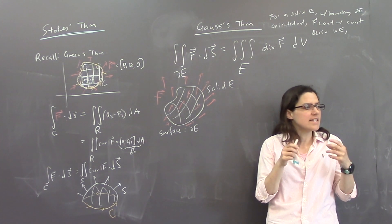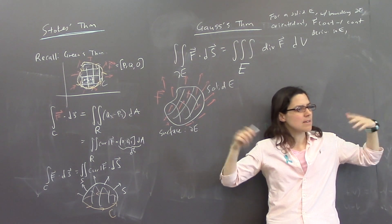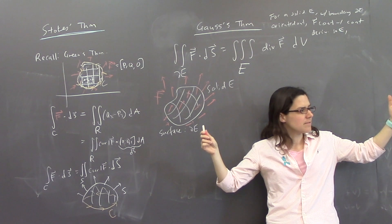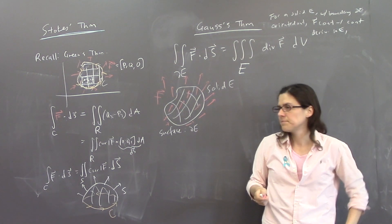So I hope it kind of makes sense that if you measure how much is created or destroyed at every point inside, that the net is like how much is emitted from the outside of the thing. So that's kind of the intuition about that.